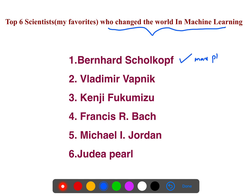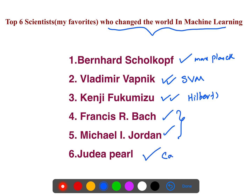I want to introduce six important scientists who changed the world in machine learning. Bernhard Schölkopf worked on kernel methods. Vladimir Vapnik, a Russian scientist, is a father of machine learning who developed statistical learning theory, especially the support vector machine. Kenji Fukumizu is a Japanese statistician interested in Hilbert spaces and machine learning applications. Francis Bach and Michael Jordan are collaborators in statistics and computer science in California. Judea Pearl has written on causality, which I believe is the future of artificial intelligence.